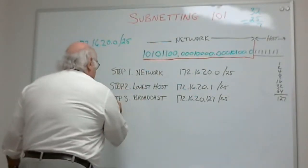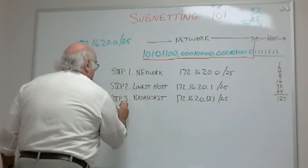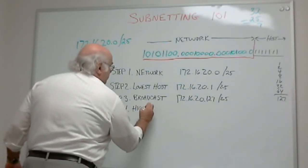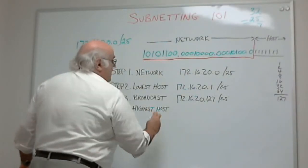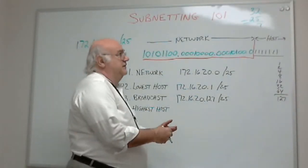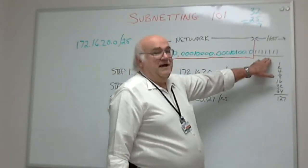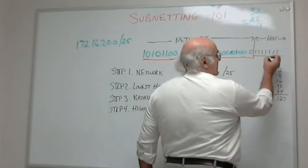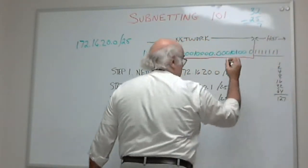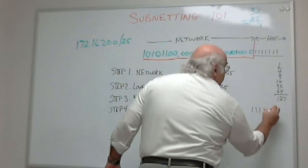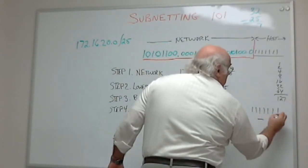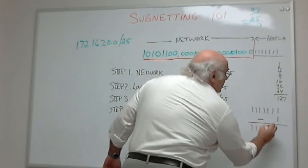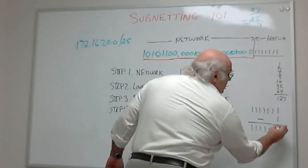Now I want to calculate my highest host address. My highest host address would have to be one less than the broadcast, right? Well, if I subtract 1 from here, let's do it down here. 1, 2, 3, 4, 5, 6, 7 minus 1. What do I have left? 1, 2, 3, 4, 5, 6. 1 minus 1 is 0.